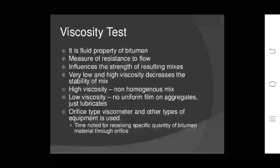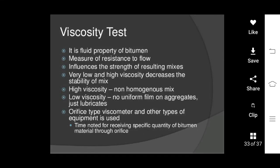Viscosity test: viscosity is a fluid property of bitumen that measures resistance to flow and influences the strength of the resulting mixes. Very low or very high viscosity decreases the stability of the mix — high viscosity leads to a non-homogeneous mix, and low viscosity prevents the formation of a uniform film around aggregates. An orifice type viscometer and other equipment are used; the time noted for receiving a specific quantity of bitumen through the orifice is measured to determine viscosity.